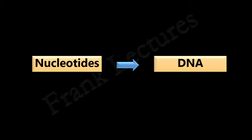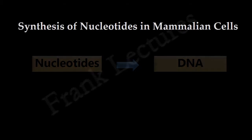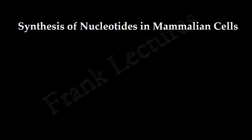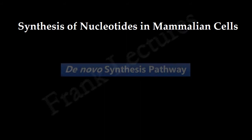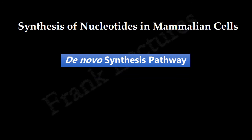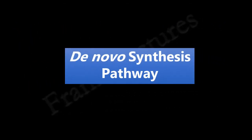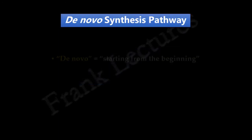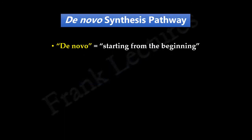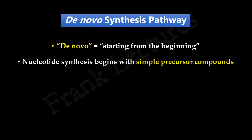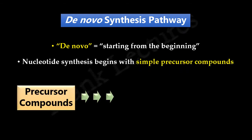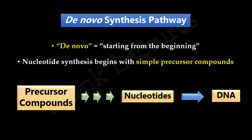Let's have an overview of how these nucleotides are synthesized in mammalian cells. In mammalian cells, there are two main pathways of nucleotide synthesis: the de novo synthesis pathway and the salvage pathway. De novo means starting from the beginning. In this pathway, nucleotide formation begins with simple precursor compounds through a series of steps, leading to the formation of nucleotides that finally form DNA.